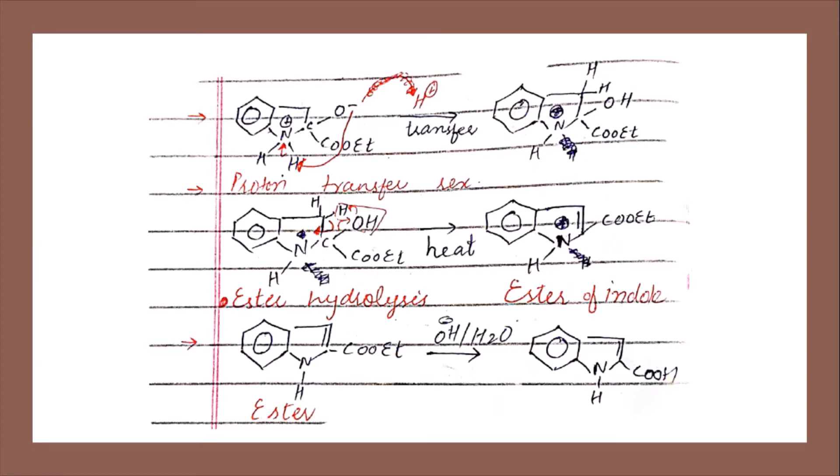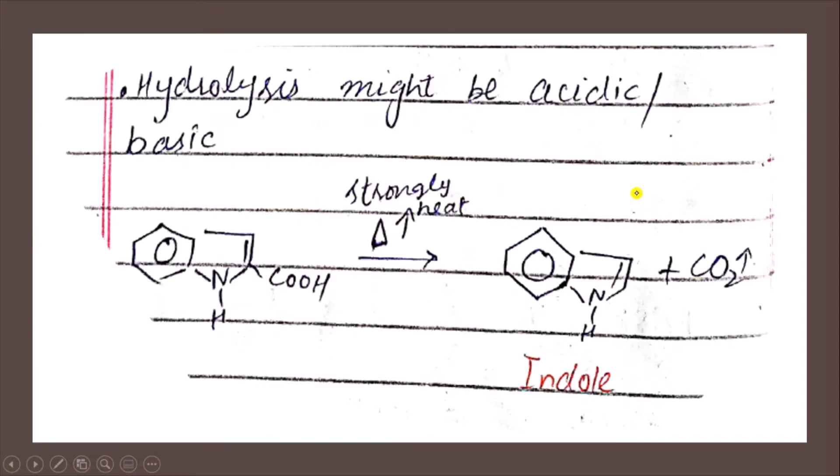Now if we want to remove this COOH group, we will have to strongly heat this product. As a result, carbon dioxide will be removed and flow away, and we will get indole. This is pure indole, not substituted. This is our desired product for which we perform this reaction.